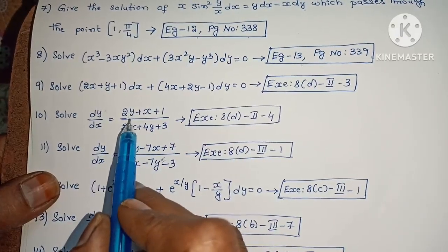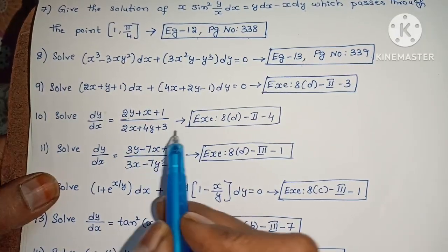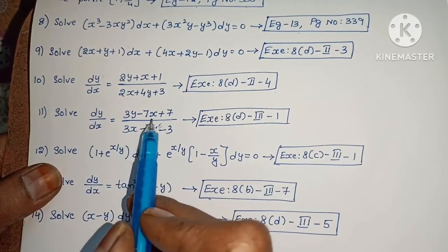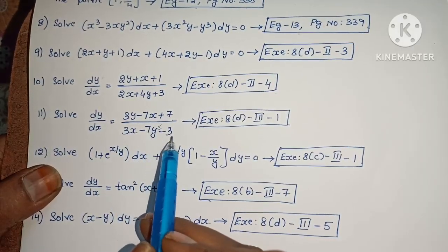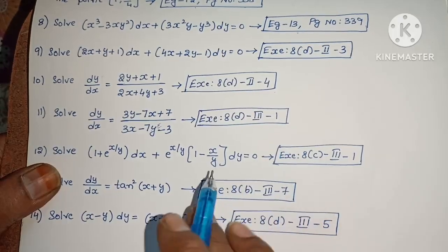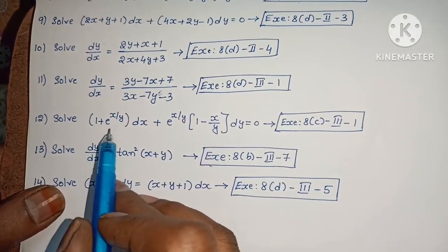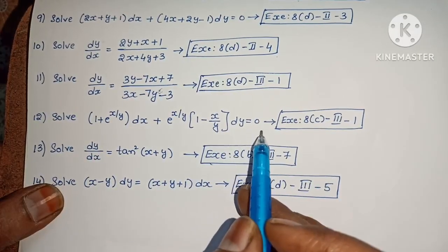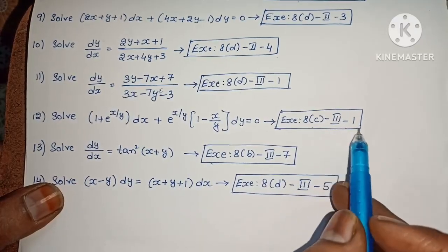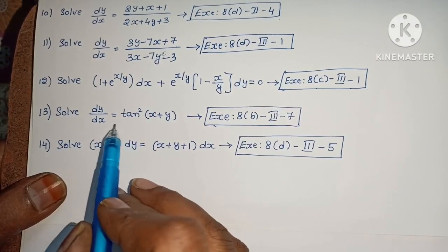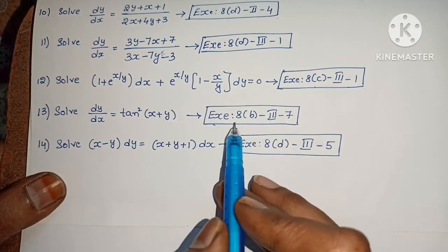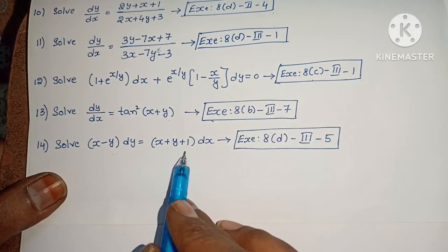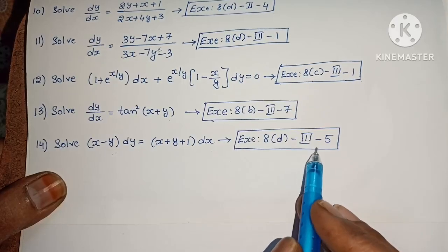Next, solve dy/dx equals (2y plus x plus 1)/(2x plus 4y plus 3). Next, solve dy/dx equals (3y minus 7x plus 7)/(3x minus 7y minus 3). Next, solve (1 plus e^(x/y))·dx plus e^(x/y)·(1 minus x/y)·dy equals 0. Next, solve dy/dx equals tan²(x plus y). Next, solve (x minus y)·dy equals (x plus y plus 1)·dx.